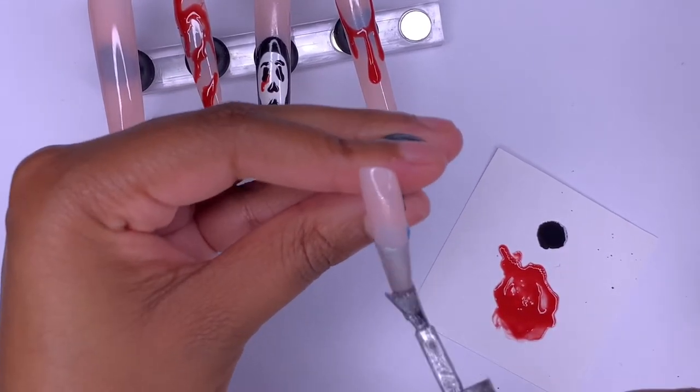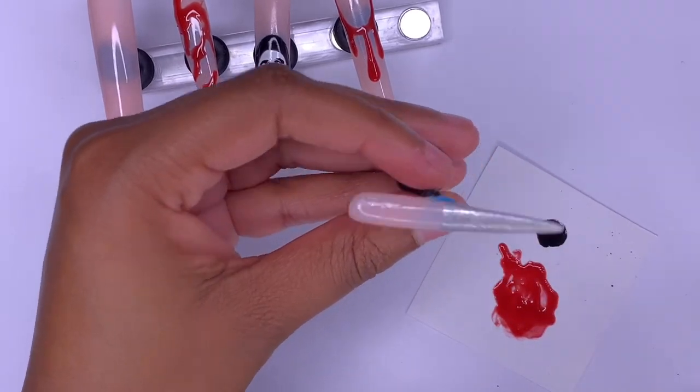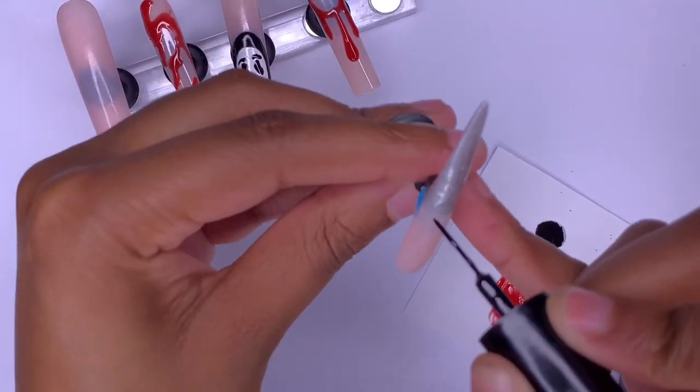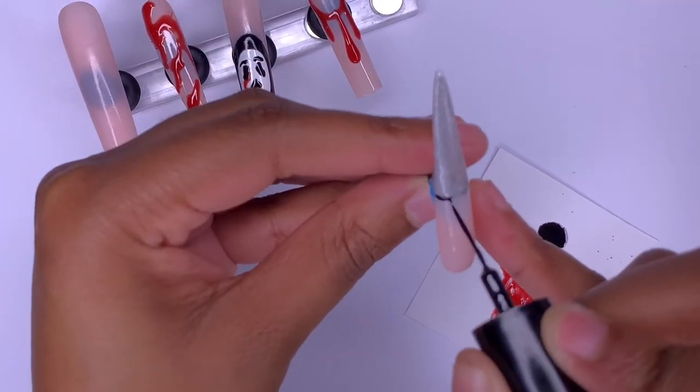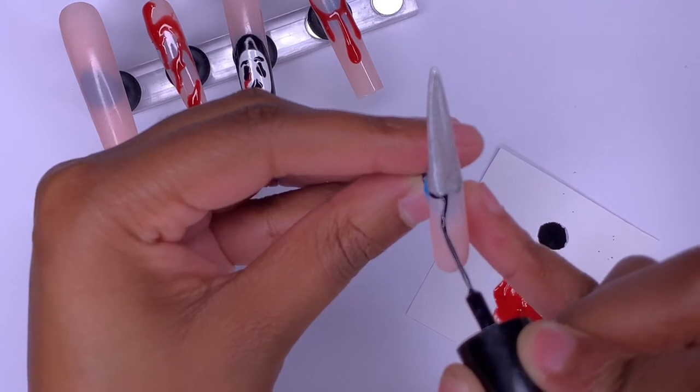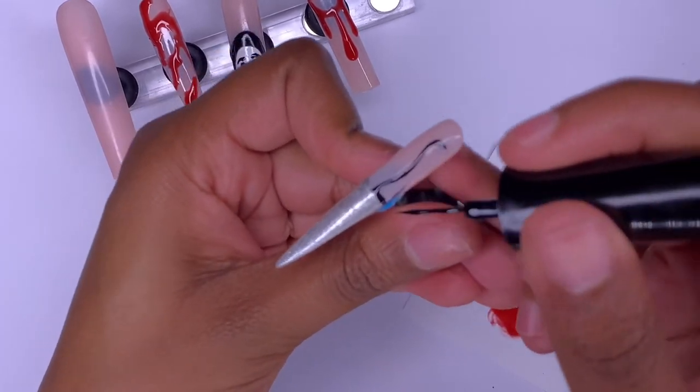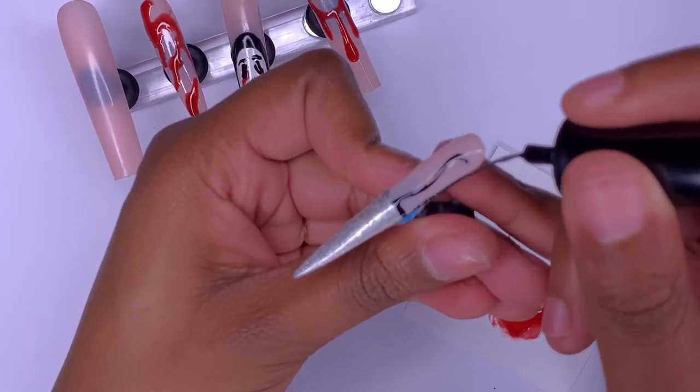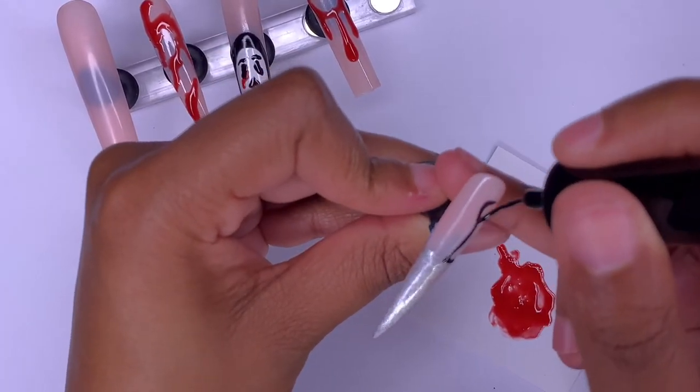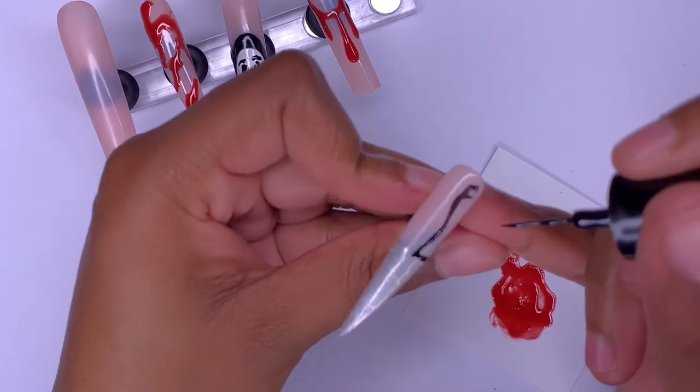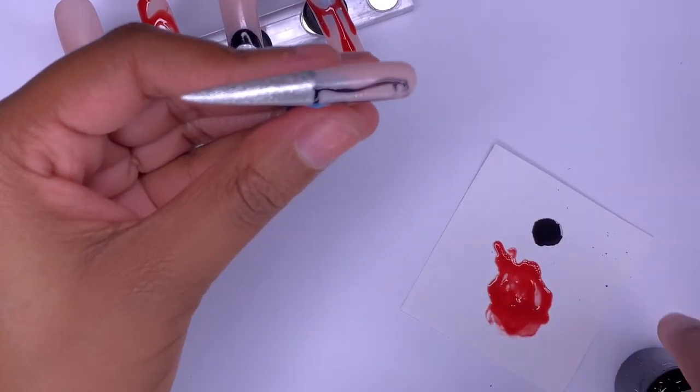Then I'm going to go in and draw on the handle using the same black gel liner from Madam Glam. Once I'm done with that, I went in and added a few accents to the nail. Just adding some red at the tip of the blade so that it looks like there's blood on it. And then also for the handle, I just added two little silver dots so it looks more like a real knife.